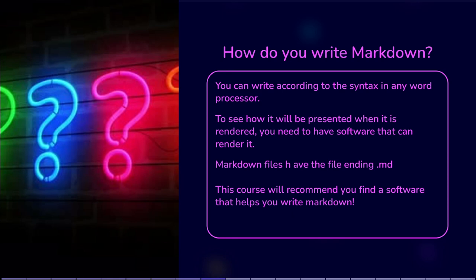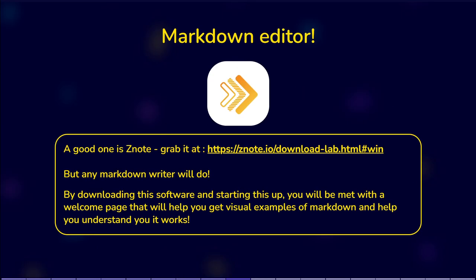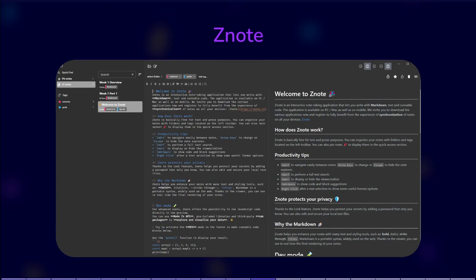There are Markdown editors out there that can help you with formatting. A good one is Znote at znote.io. When you first start the program, you will be met with a welcome page that will give you visual examples of Markdown and help you understand how it works. You can also Google the Markdown guide cheat sheet to check out the syntax rules to help you write Markdown.